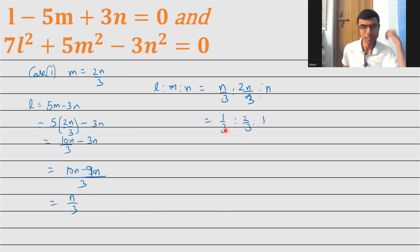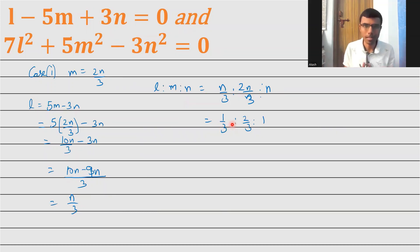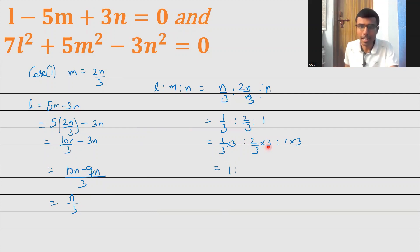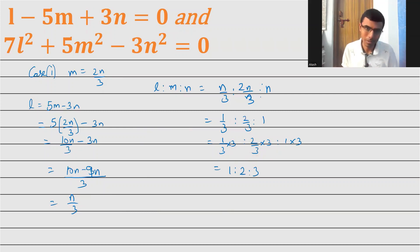Since this is a ratio and the denominator is 3, I can multiply the entire ratio by 3. So (1 by 3) into 3 is to (2 by 3) into 3 is to 1 into 3: the 3s cancel, leaving 1 is to 2 is to 3. So l is to m is to n is 1 is to 2 is to 3. Therefore the direction ratios of L1, which is (a1, b1, c1), equal to (1, 2, 3).